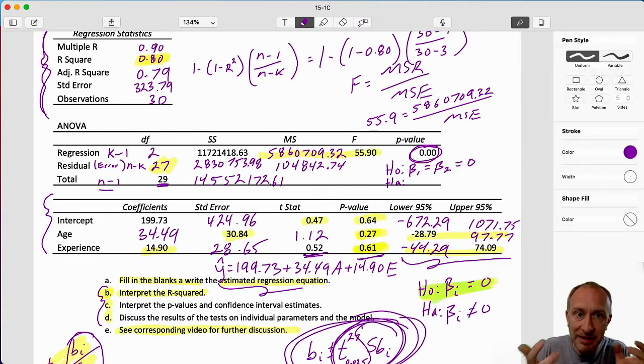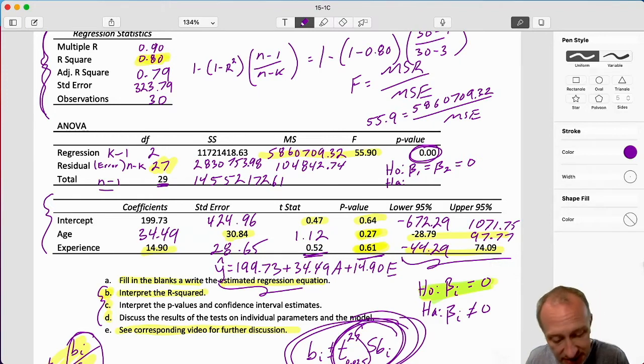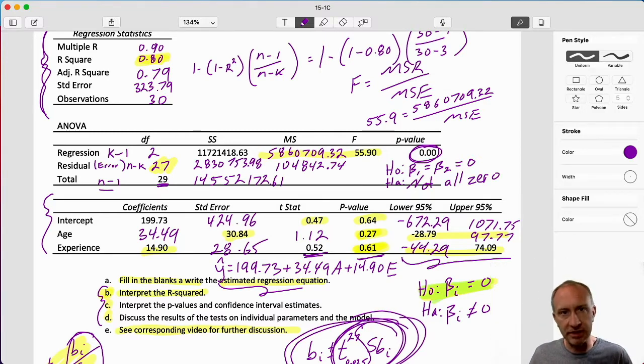If we just looked at the results from our t test that said beta one is zero, beta two is zero, and then we look at the null for the f test, we would expect not to reject based on what we just saw in our t tests. But here, for the f tests, we absolutely reject.